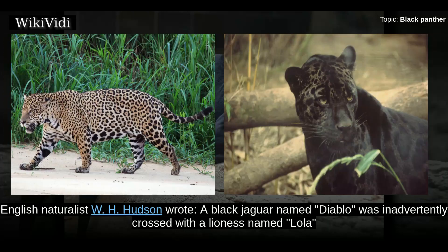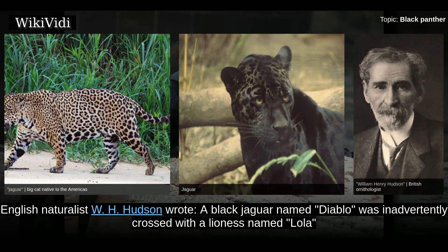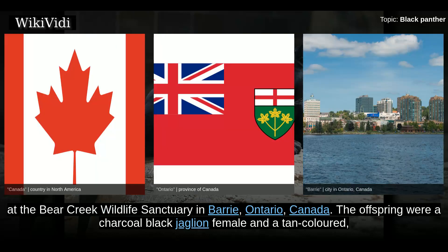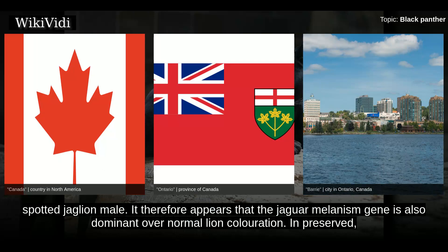The black jaguar was considered a separate species by indigenous peoples. A black jaguar named Diablo was inadvertently crossed with a lioness named Lola at the Bear Creek Wildlife Sanctuary in Burry, Ontario, Canada. The offspring were charcoal black jaguars and a tan-colored spotted jaguar male. It therefore appears that the jaguar melanism gene is also dominant over normal lion coloration.